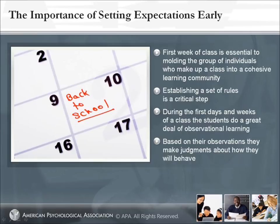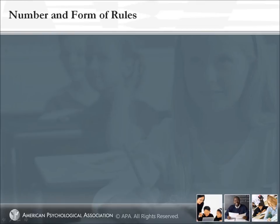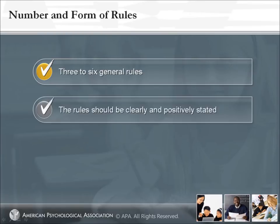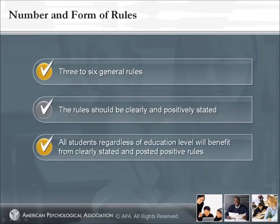Number and Form of Rules. Most classroom management experts recommend not more than three to six general rules. If the list is longer, the students will have difficulty learning and integrating the rules. The rules should be clearly and positively stated — for example, 'respect others,' 'be on time,' and 'be prepared.' There is a difference between 'respect others' and 'do not interrupt the teacher or a student when speaking.' All students, regardless of education level, will benefit from clearly stated and posted positive rules.